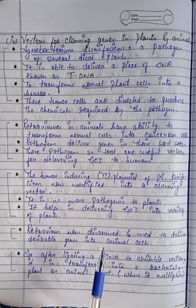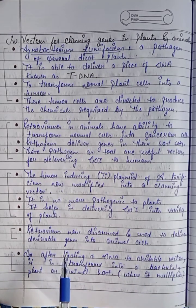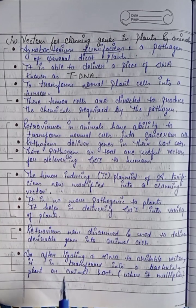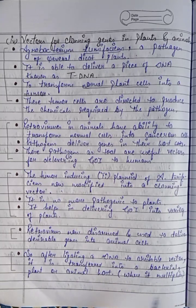Retroviruses have also been disarmed and used to deliver desirable genes into animal cells. After ligating a DNA to a suitable vector, it is transferred into bacterial, plant, and animal cells — a competent host.